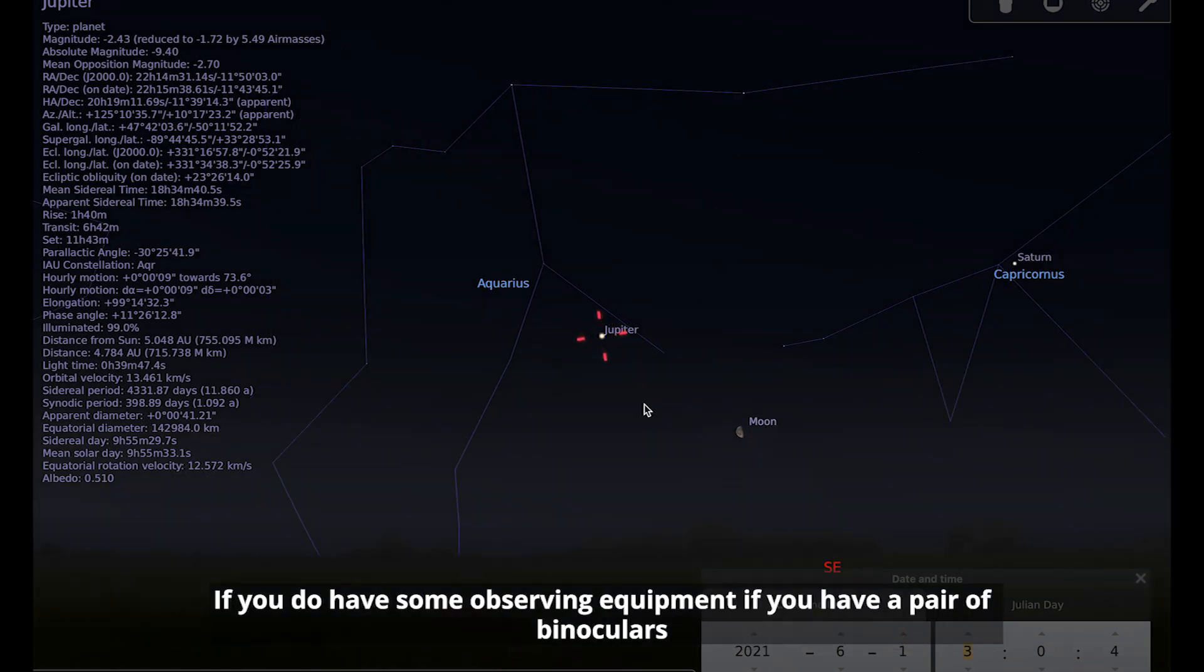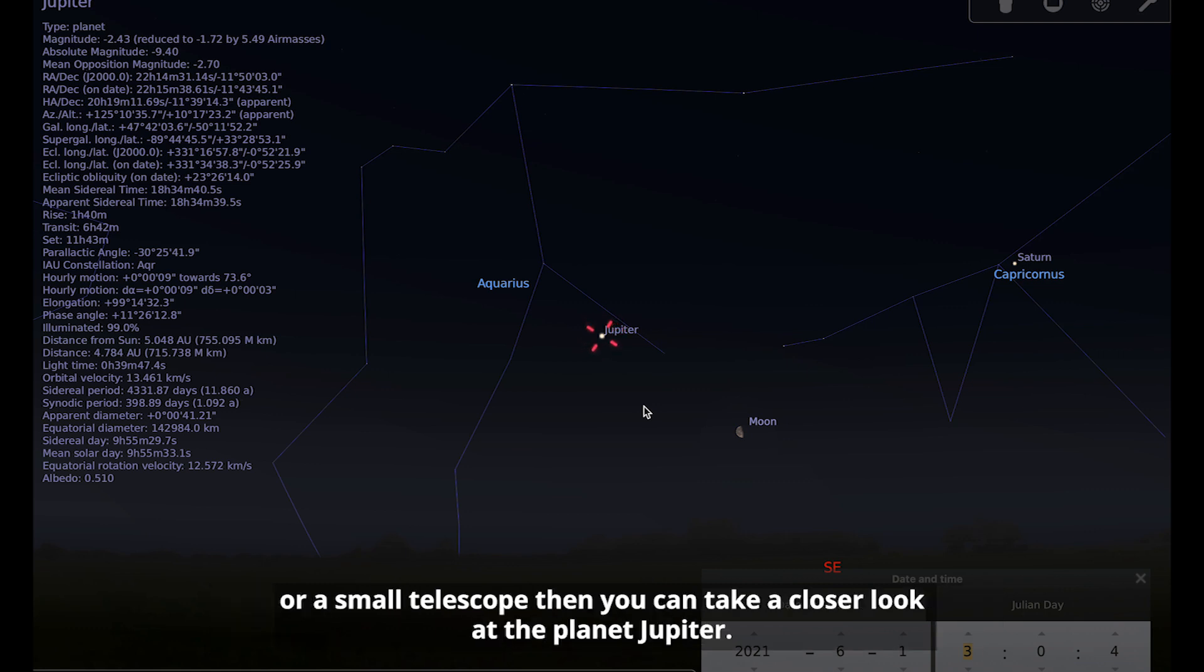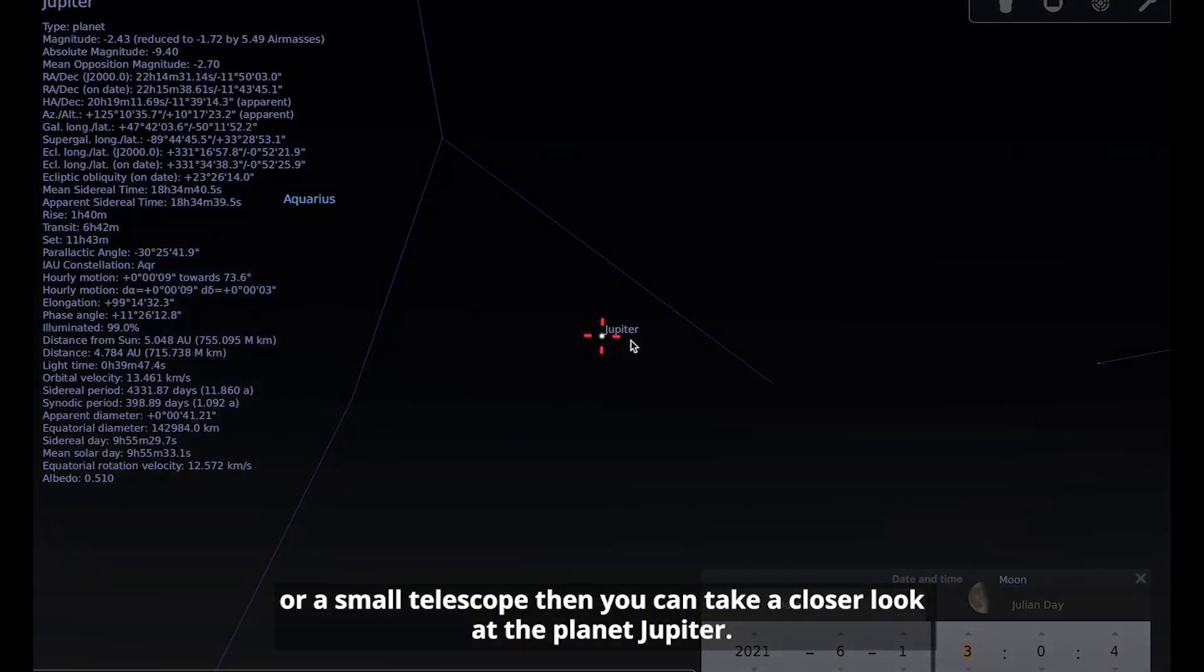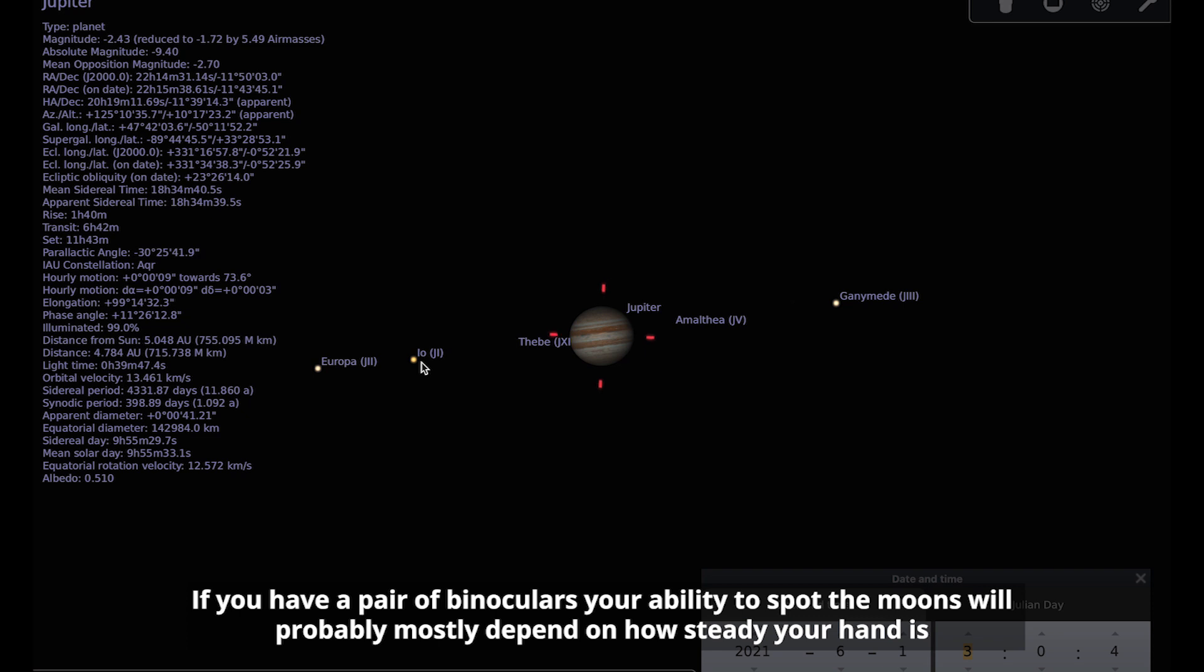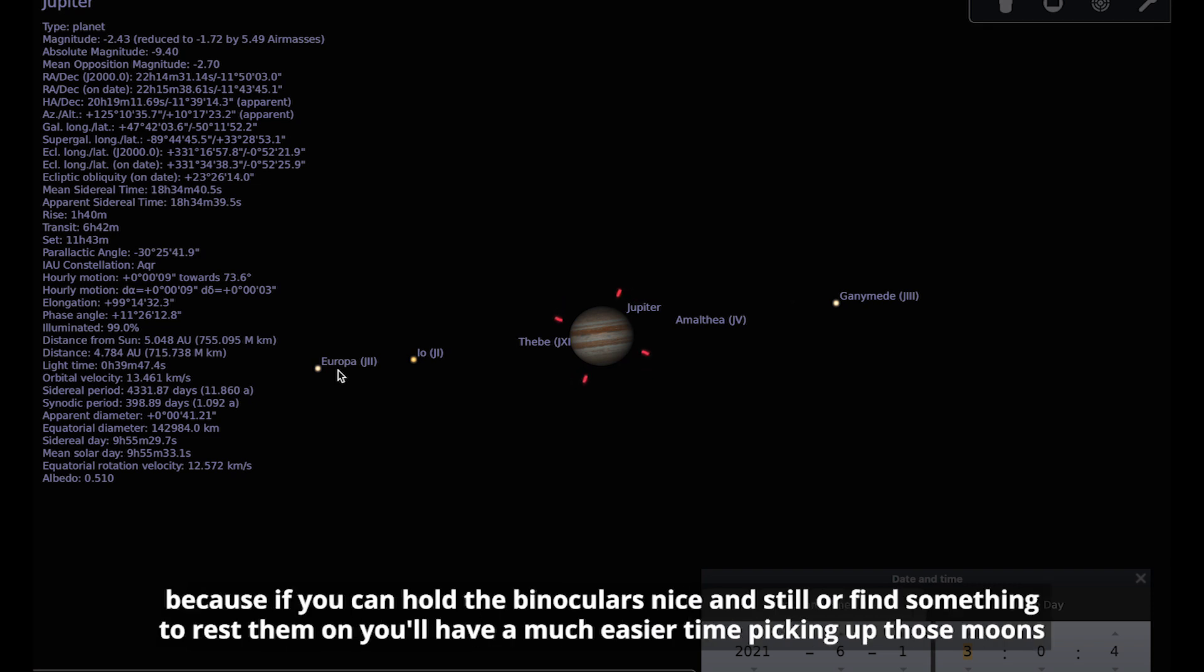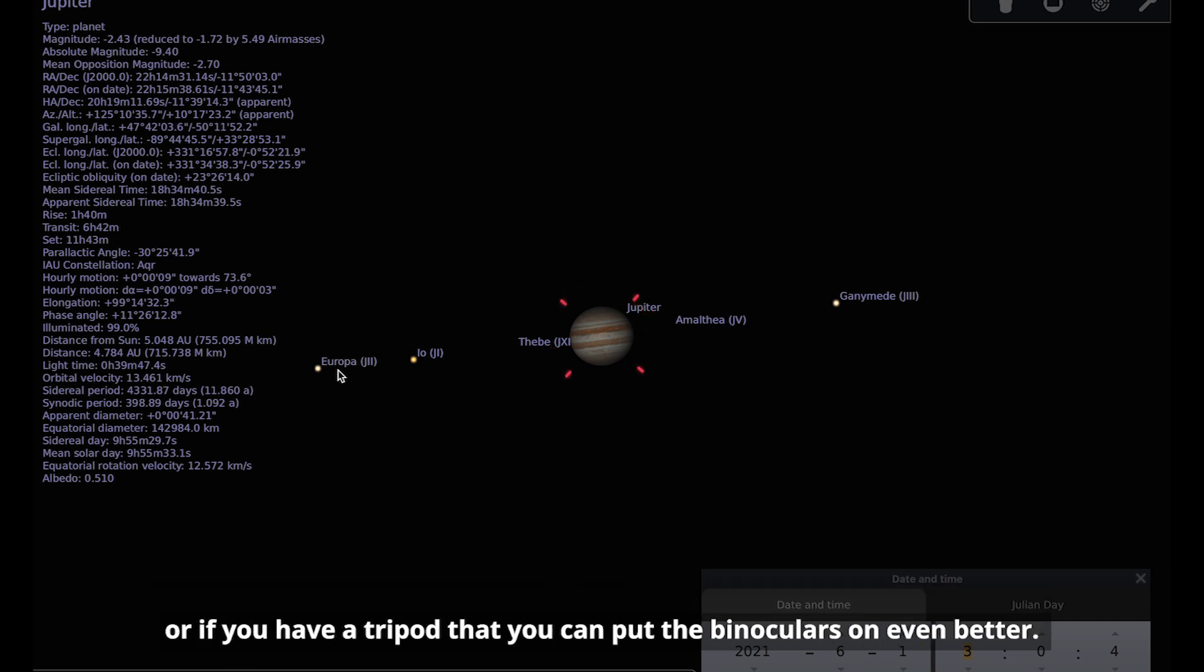If you do have some observing equipment, if you have a pair of binoculars or a small telescope, then you can take a closer look at the planet Jupiter and see if you can spot the four Galilean moons. If you have a pair of binoculars, your ability to spot the moons will probably mostly depend on how steady your hand is. If you can hold the binoculars nice and still, find something to rest them on, you'll have a much easier time picking out those moons.